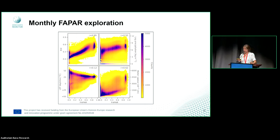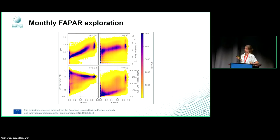We did some general exploration of the FAPAR time series with other parameters. We plotted it against EVI — the Enhanced Vegetation Index — and land surface temperature, and we see some common relationships. But we also see that the variability in range can be quite wide, and it's not always easy to estimate FAPAR from only one parameter.